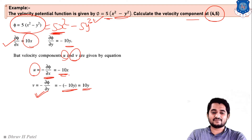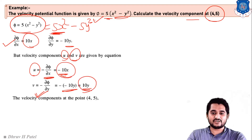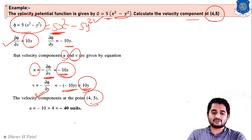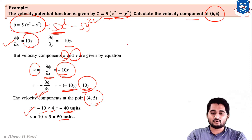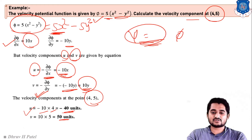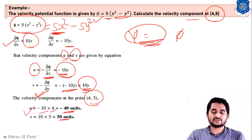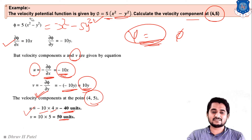We have the values of u and v, so at point (4, 5): u = -10 × 4 = -40 units, and v = 10 × 5 = 50 units. For this type of example, they can also give the value of stream function psi. For either phi or psi, simply remember the equations, differentiate with respect to the required direction, and you will get your answer.